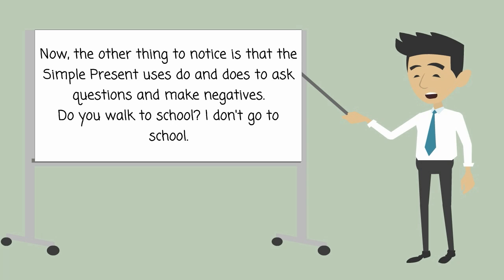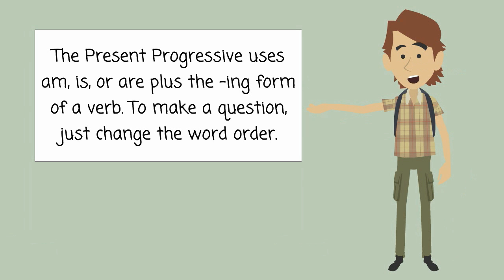The other thing to notice is that the Simple Present uses do and does to ask questions and make negatives. Do you walk to school? I don't go to school. The Present Progressive uses am, is, or are plus the -ing form of a verb.